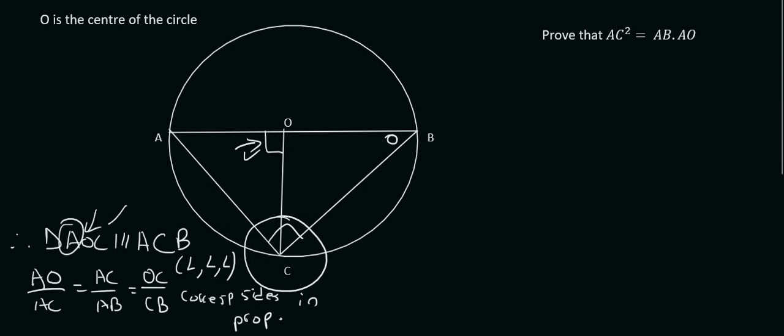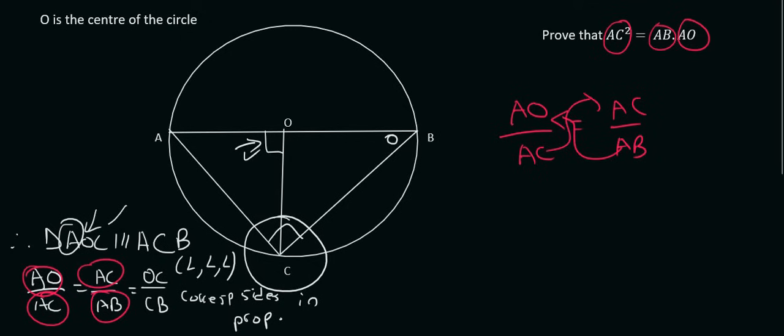And so now we need to look at what they want. They want AC, so I'm going to circle all the ACs. There it is, and there it is. And they want AB and AO, so AB, AO. So I just say AO over AC is equal to AC over AB. I then do cross-multiplying, and that's going to give me AO times AB is equal to AC to the power of 2. And that is the final answer.